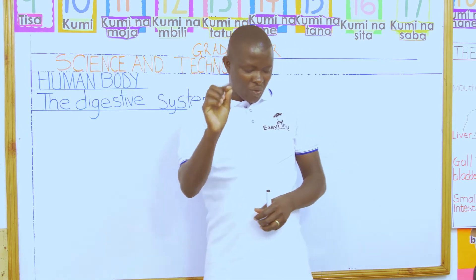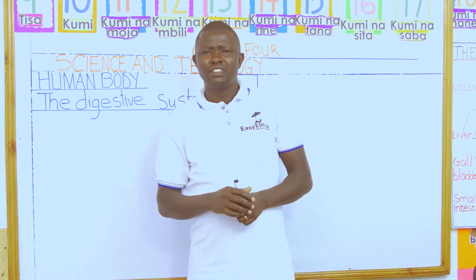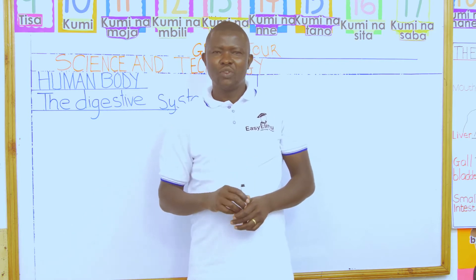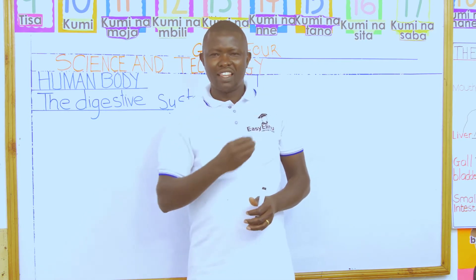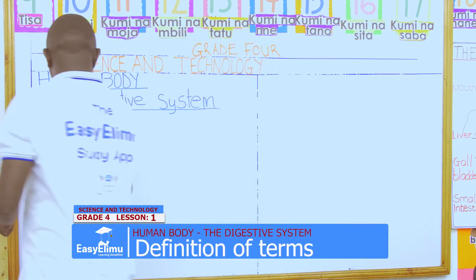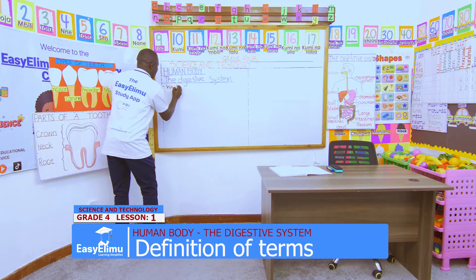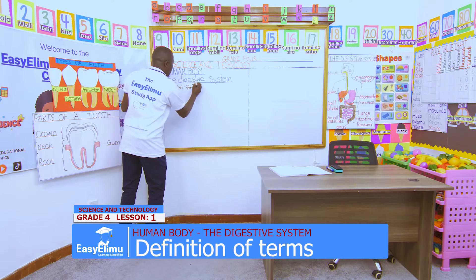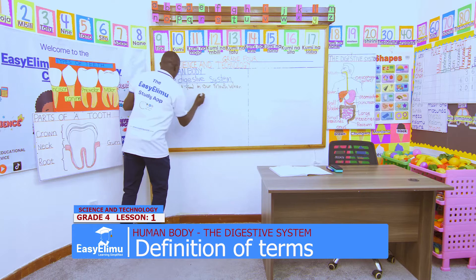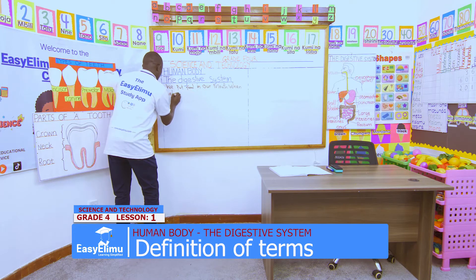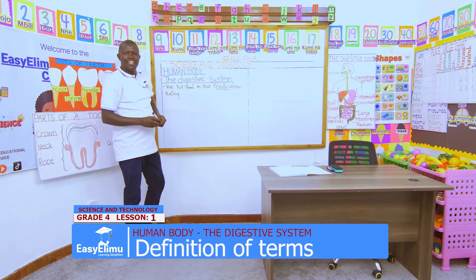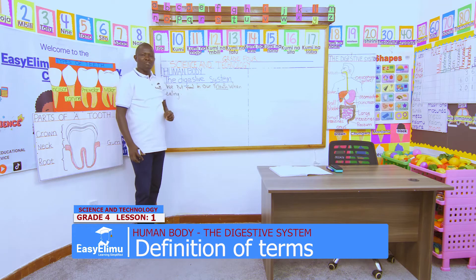Now I would ask one question: which parts are involved during digestion? First, we've said we put food in our mouth. As you open your mouth, you will observe the following things. We put food in our mouth when eating. So we say the mouth is one part that is involved in digestion.